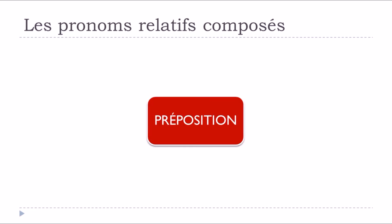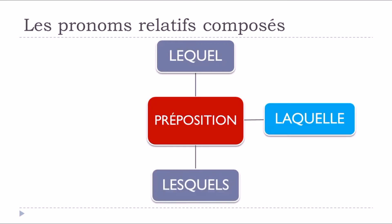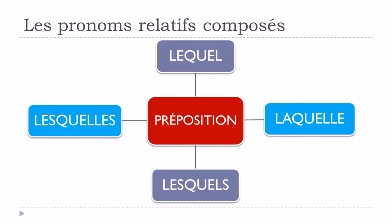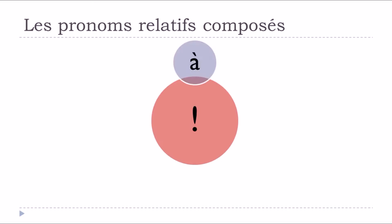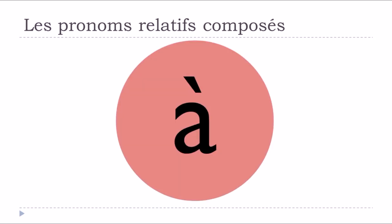Normally if you want to use these pronouns, you can combine them with prepositions — so you put your preposition and after that you put lequel, laquelle, lesquels, or lesquelles. It's quite simple. But of course, as usual in French, when it can be simple, we've got some exceptions. We have two exceptions for this pronom relatif composé, and we're talking about the prepositions à and de. For these two prepositions it will be a bit tricky. So we will start with à.